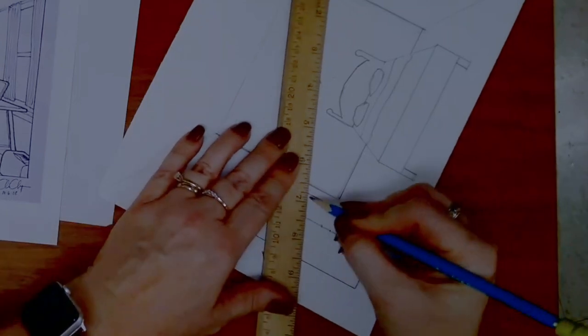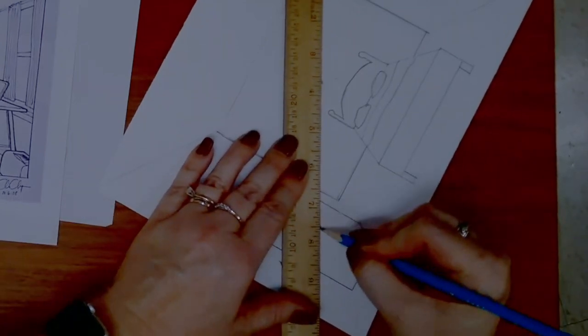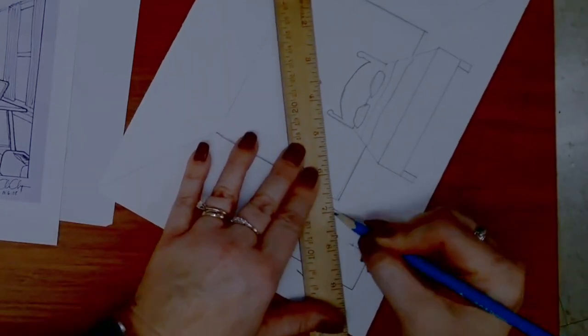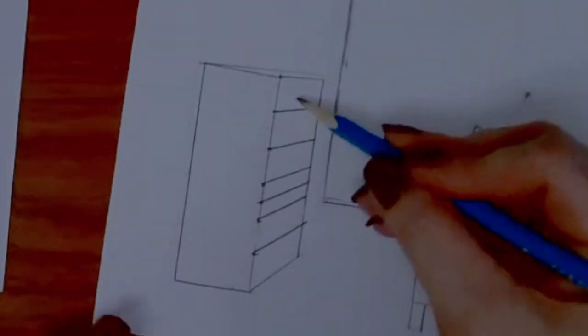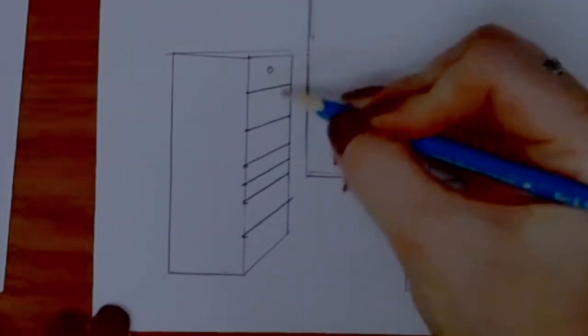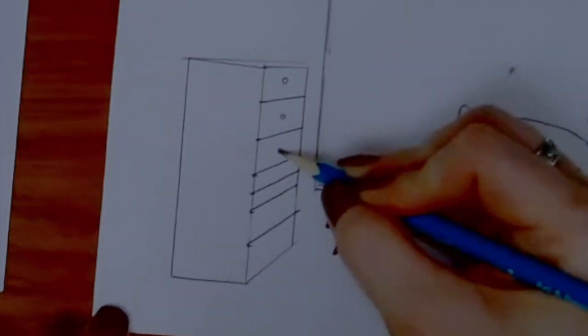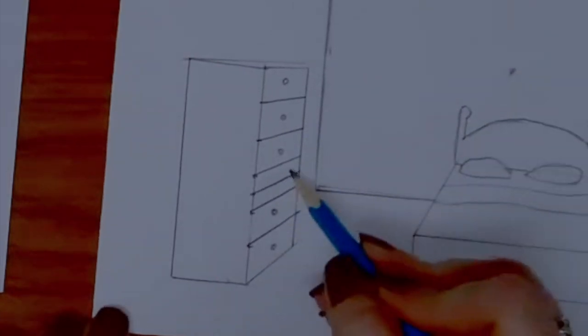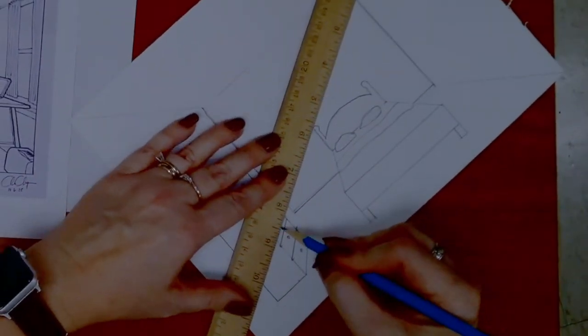My ruler stays lined up with the tick mark and vanishing point for every line, even if I don't make the line extend past the dresser. Next, I add a few little knobs. I do not need to use the vanishing point or anything for those. However, if I want pole handles, I do have to line those up.